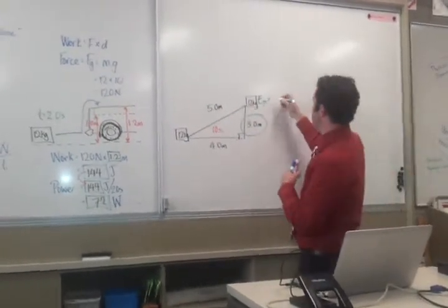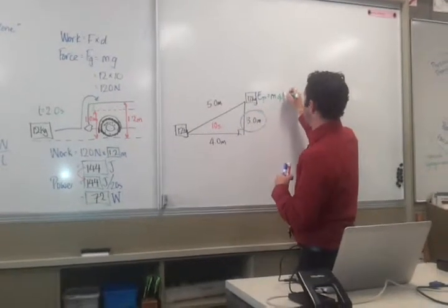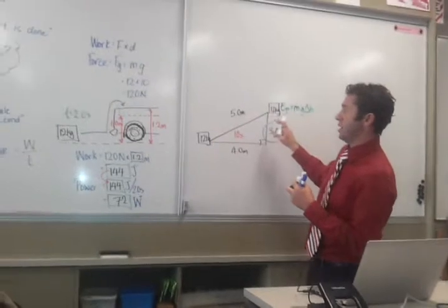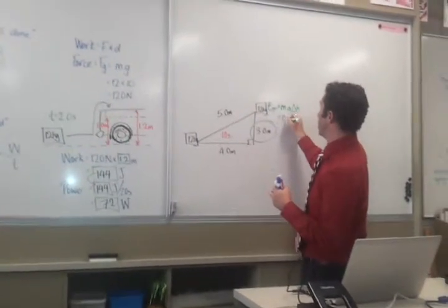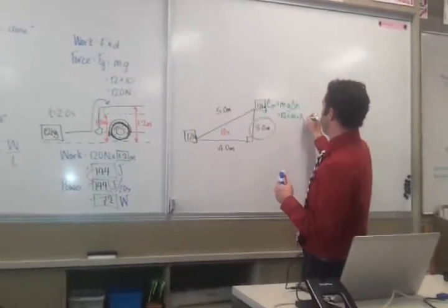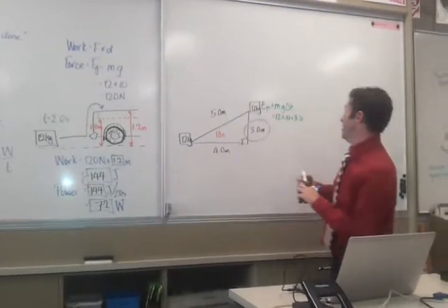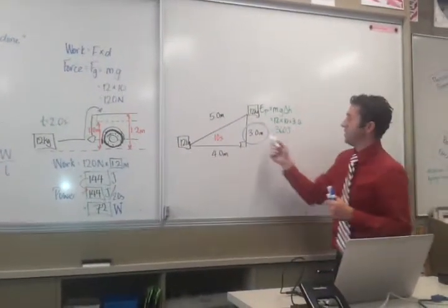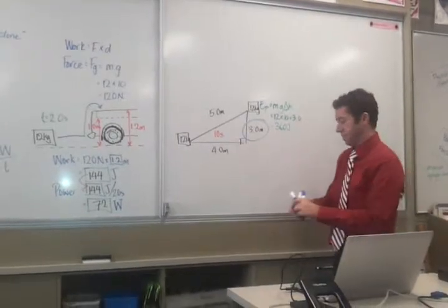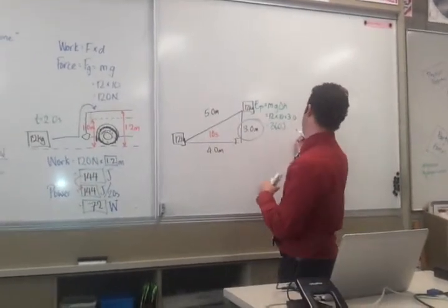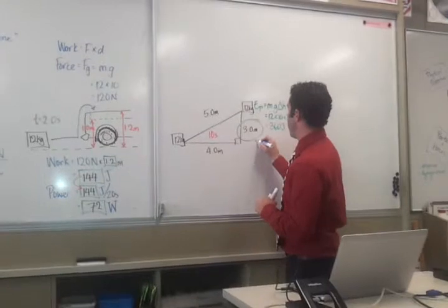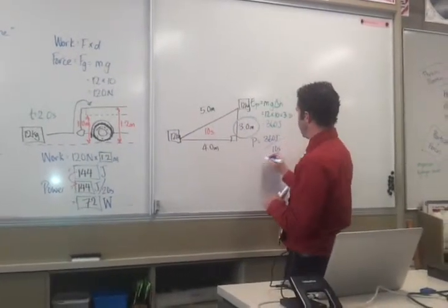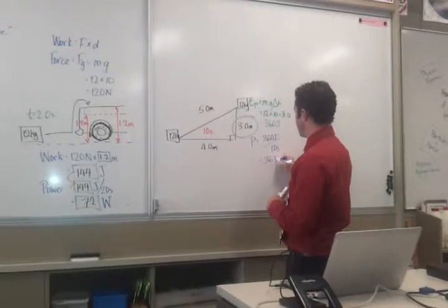So E equals M, G, delta H. So I've got 12 times 10 times 3.0, which is 360 joules. And then if it took 10 seconds, my power would be 360 joules over 10 seconds, so 36 watts.